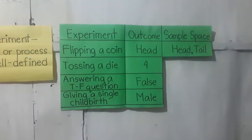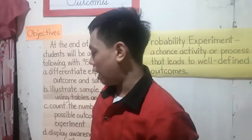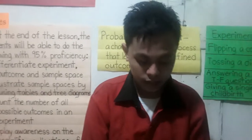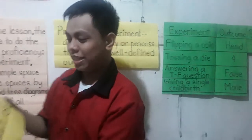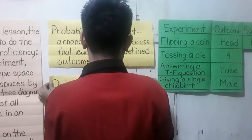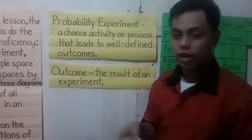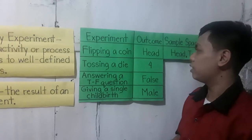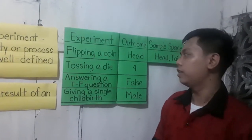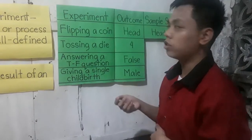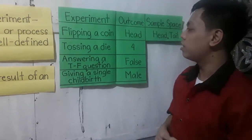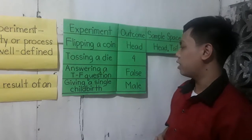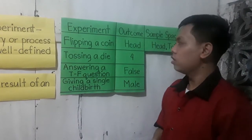How about outcomes? Will somebody give me an idea of what an outcome is? Florentino, please stand. Very good. So, outcome is the result of an experiment. For the experiment of flipping a coin, the outcome is a head. For tossing a die, the outcome would be a 4. For answering a true or false question, the outcome would be false. For giving a single childbirth, the outcome is a male.